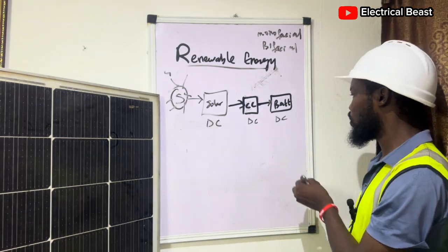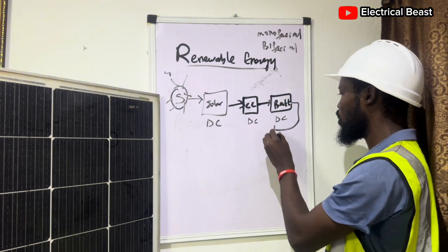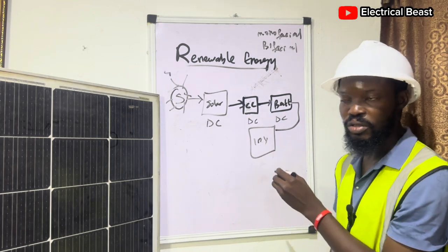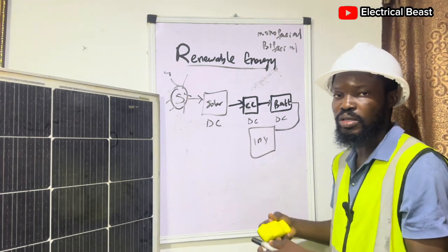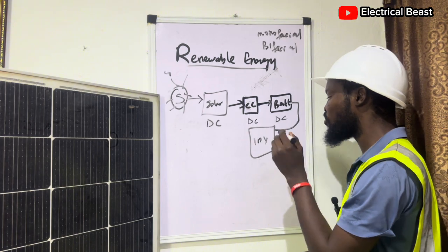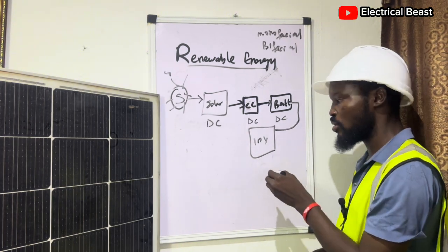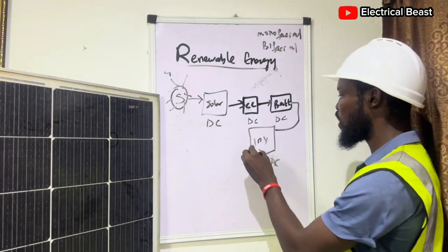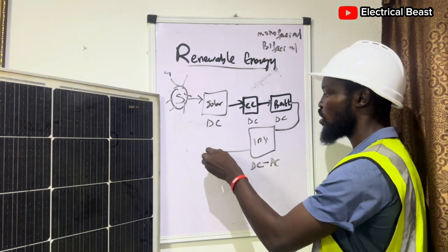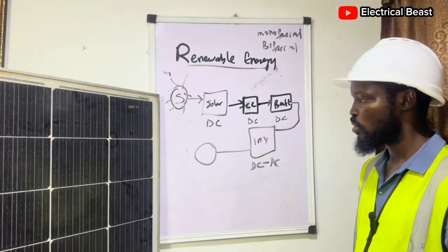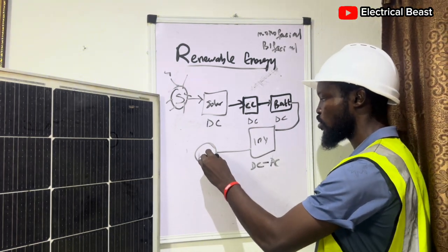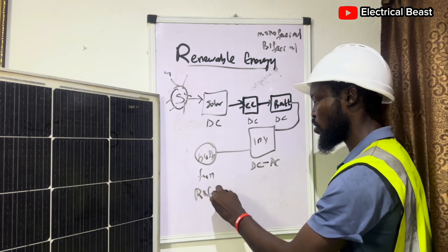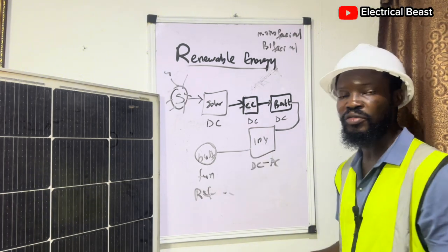From the battery it moves straight to the inverter. The inverter is the main component of every solar system — it is like the heart of the solar system. The inverter converts the energy stored in the battery from DC to AC, which is alternating current. The output of the inverter is what goes into the load — the load can be your bulb, your fan, your refrigerator, and so on.